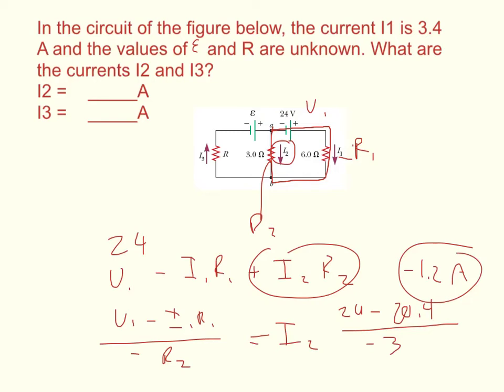So I2 is negative 1.2, and all that negative sign tells you is really that the arrow is pointing in the wrong direction. But because the arrow is pointing in the wrong direction, we can still use Kirchhoff's junction rule and just throw in our negative number instead of subtracting a positive number.